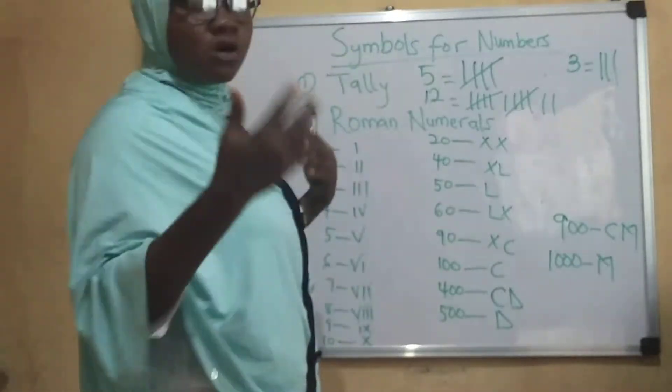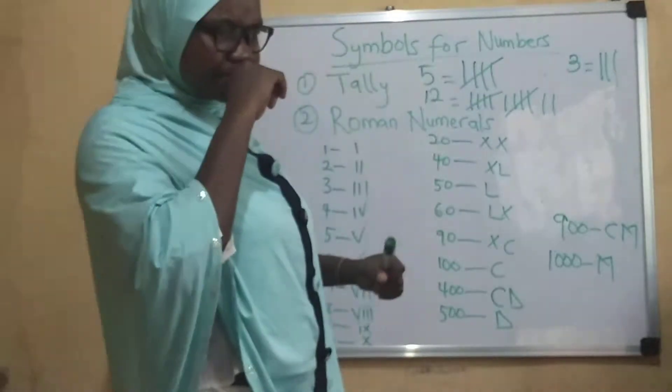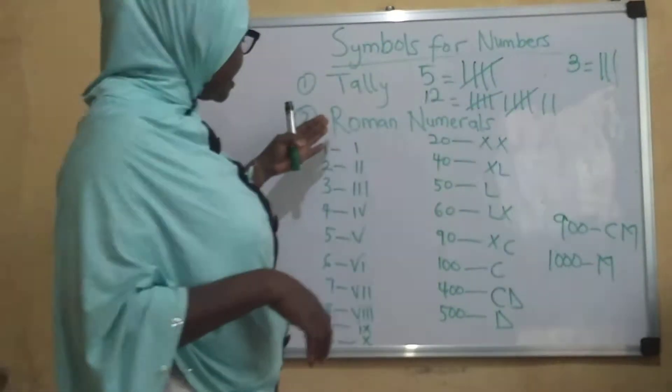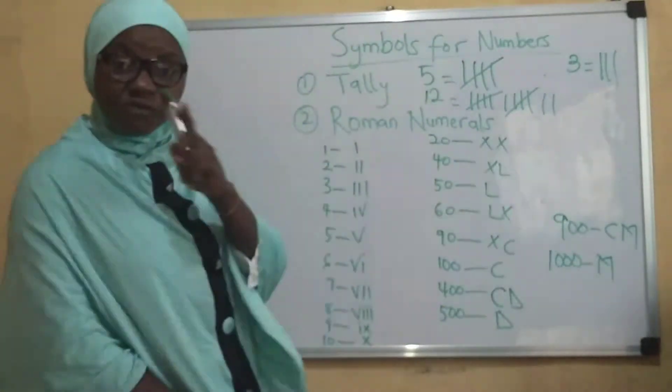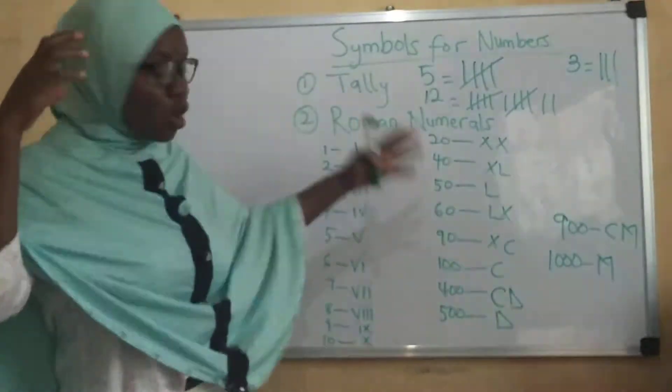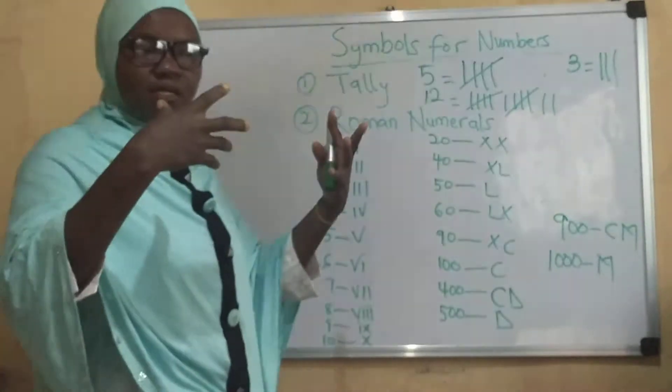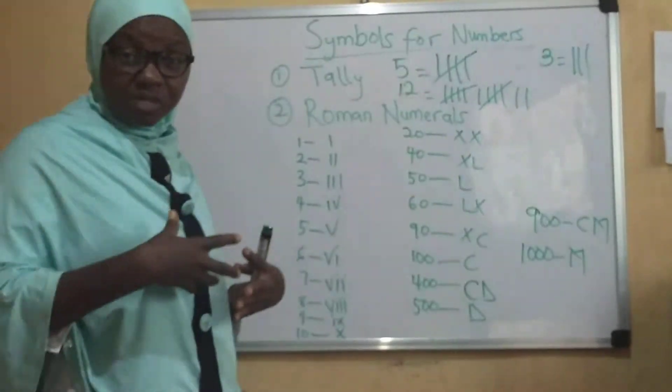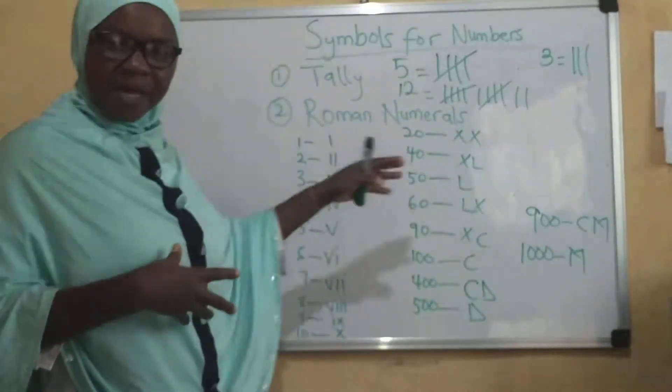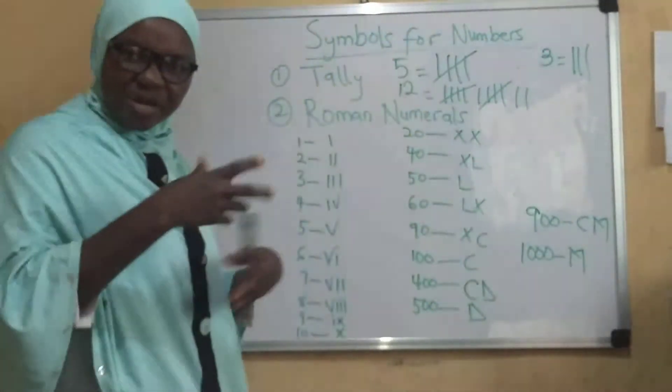Now the other symbols to represent numbers apart from tally is the Roman numerals. Now with these Roman numerals, we have a series of numbers that we can use to represent. You need to learn or memorize this. You need to know this basic one offhand.